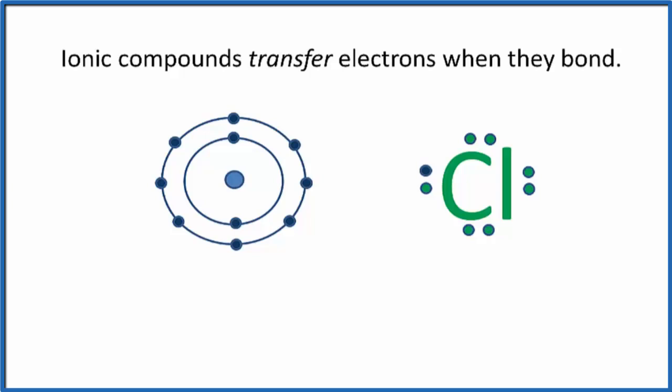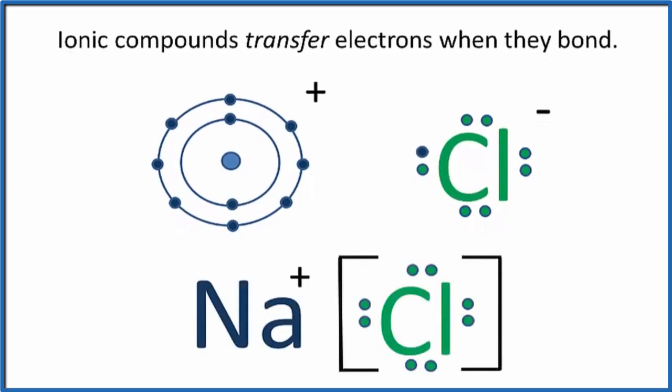The chlorine has a full outer shell and they bond together to form sodium chloride. So that's the Lewis structure for sodium chloride.